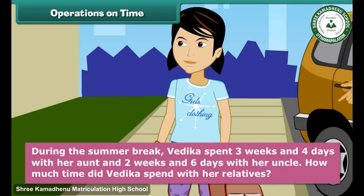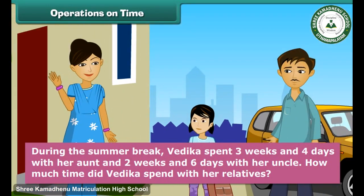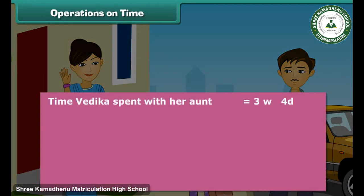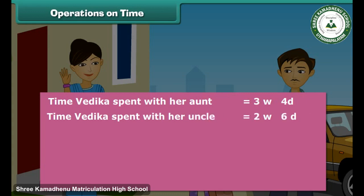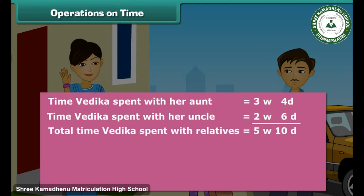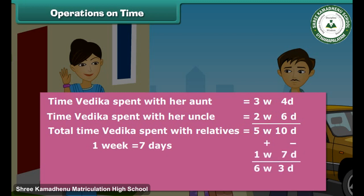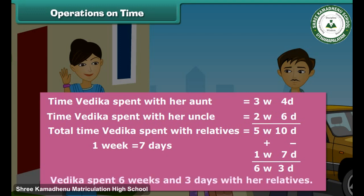During the summer break, Vedika spent 3 weeks and 4 days with her aunt and 2 weeks and 6 days with her uncle. How much time did Vedika spend with her relatives? Time with aunt: 3 weeks, 4 days. Time with uncle: 2 weeks, 6 days. Total: 5 weeks and 10 days. Since 1 week equals 7 days, we subtract 7 from 10 and add 1 to 5 weeks. Therefore, Vedika spent 6 weeks and 3 days with her relatives.